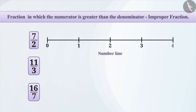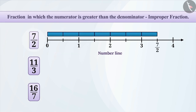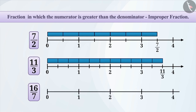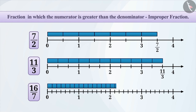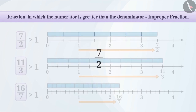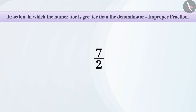Let's also represent them on the number line. To represent 7 by 2, we will divide the unit length to two equal parts and take seven such parts. Similarly, to represent 11 by 3, we will divide unit length to three equal parts and take 11 such parts. For 16 by 7, we will divide unit length to seven equal parts and take 16 such parts. As you can see, each fraction is lying on the right side of 1, therefore it's greater than 1. Whenever the numerator is greater than the denominator, the value of the fraction is greater than 1 — such fraction is called an improper fraction.